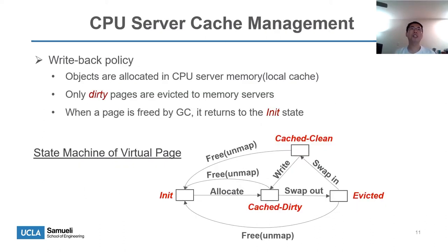The CPU server memory works as a software-managed inclusive cache. The application allocates objects on the CPU server local cache. When the local cache is full, cold and dirty pages will be evicted to the memory servers. If the pages are freed by GC, SAMRU will unmap the virtual pages and reset them to an unmapped state. Clean pages will not be evicted to the memory servers.